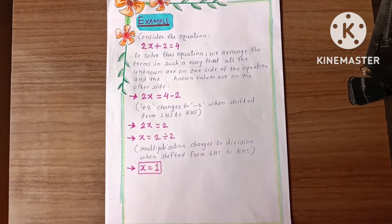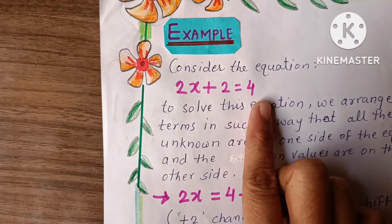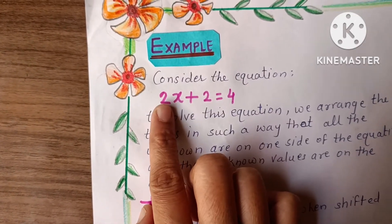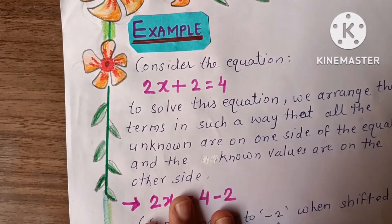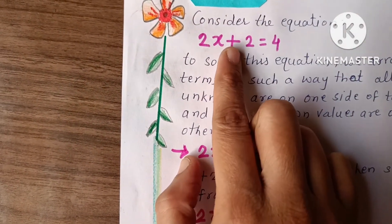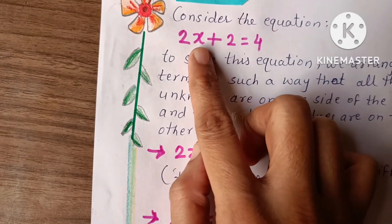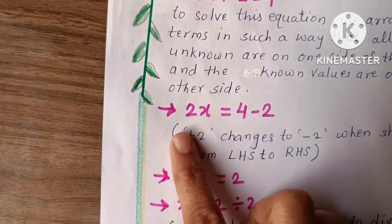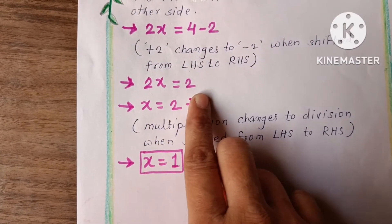So let's see the equation. While solving this equation, first we have to put the known values on one side of the equation and the unknown values on the other side. Here there is plus two — when we move it to the opposite side of the equation, the plus will convert into minus. So plus converted into minus: two x is equal to four minus two, which gives two x is equal to two.